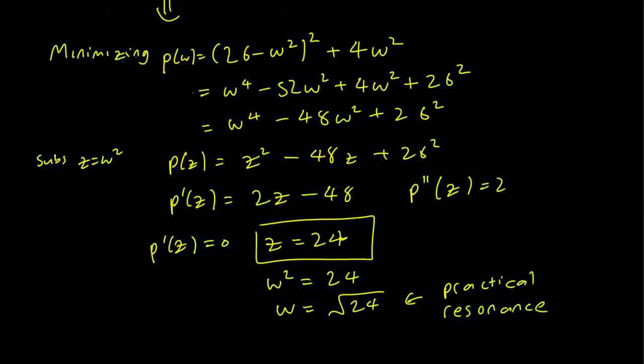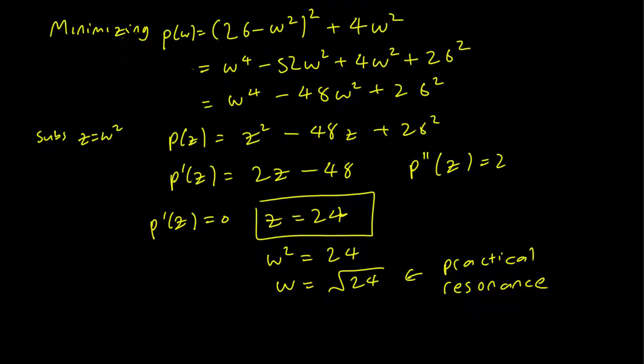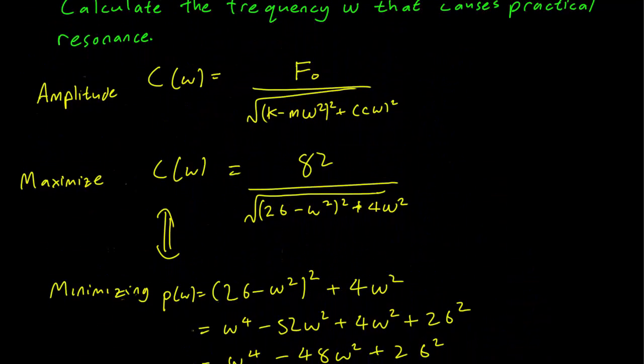This is the omega which will minimize the denominator and maximize the amplitude.